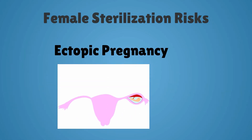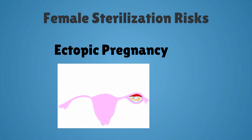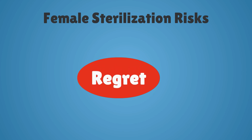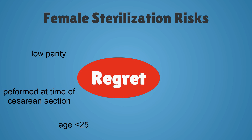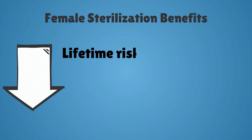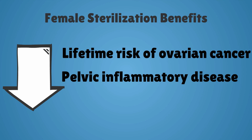The risks of female sterilization include an increased risk of ectopic pregnancy, with a 10-year cumulative probability of ectopic pregnancy after tubal ligation of 7.3 per 1,000. Regret is another risk. Risk indicators for regret include age less than 25, sterilization at the time of cesarean section, low parity, minority status, change in marital status, low access or incomplete information about the procedure, or making the decision under pressure from a spouse or because of medical indication. Non-contraceptive benefits of tubal ligation include decreased lifetime risk of ovarian cancer and some protection against pelvic inflammatory disease.